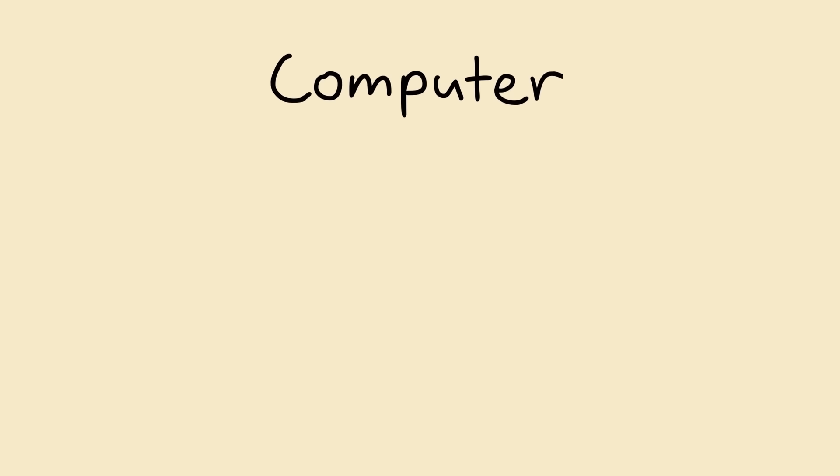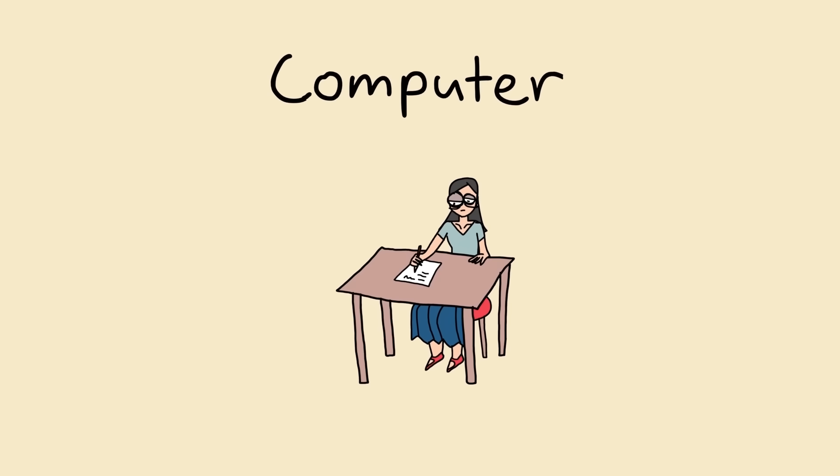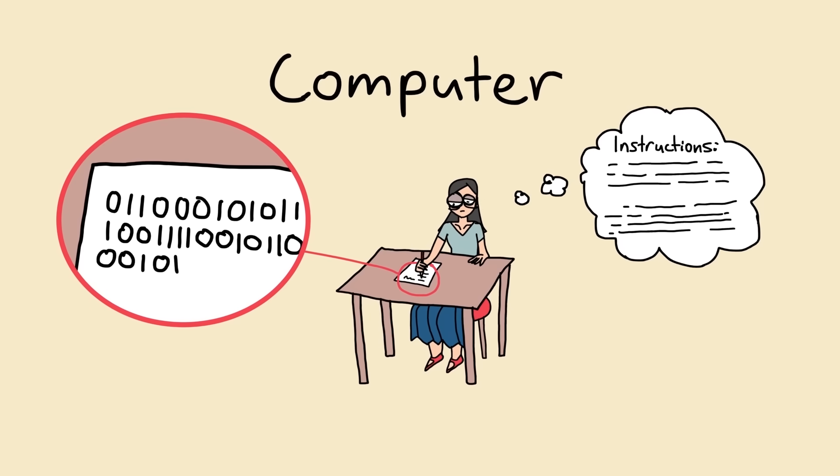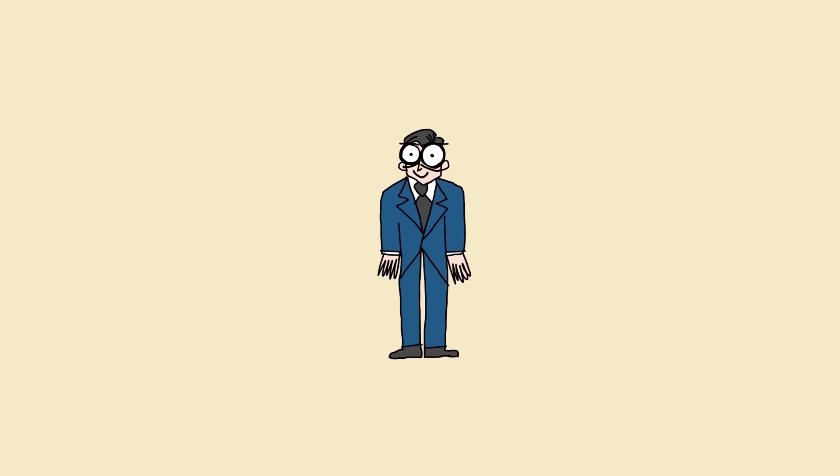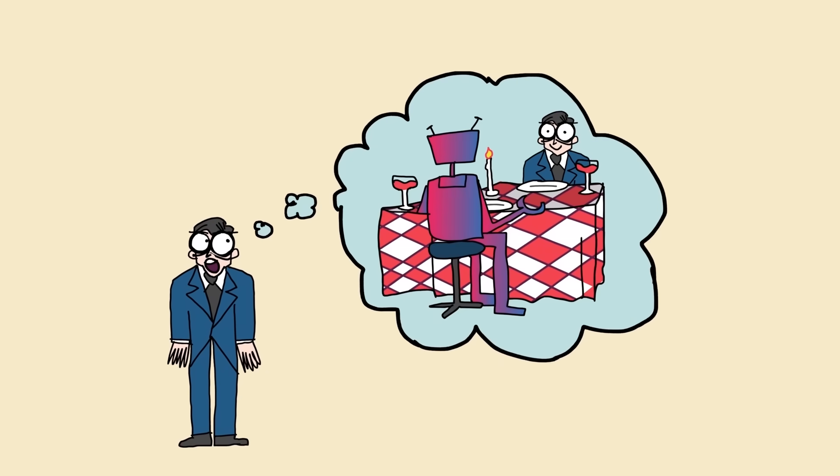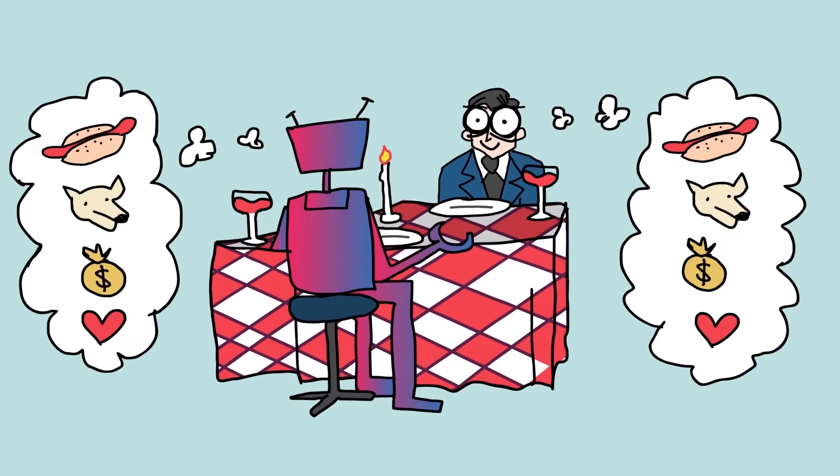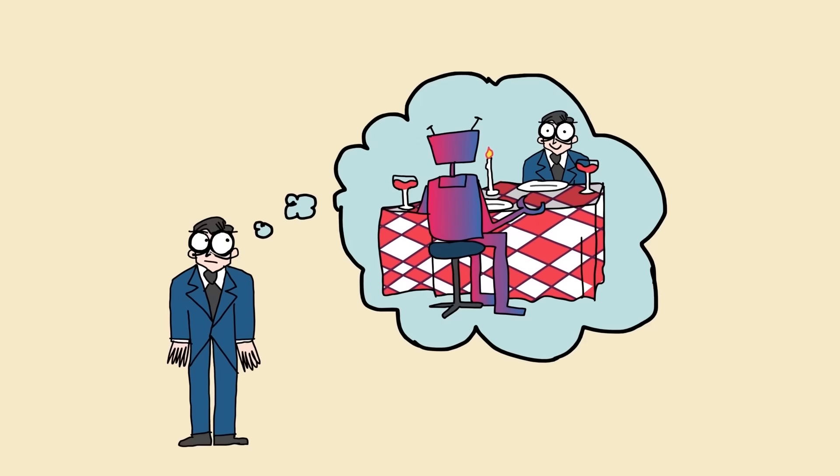The word computer referred to people, usually women, who were given a list of instructions and carried out tedious computations by hand. This job required little thought and definitely no mathematical intuition. Throughout his life, Turing was fascinated with the relationship between humans and machines. He's famous for coming up with the idea of the Turing Test, a test for determining whether a machine is capable of thinking like a human. This was no exception.